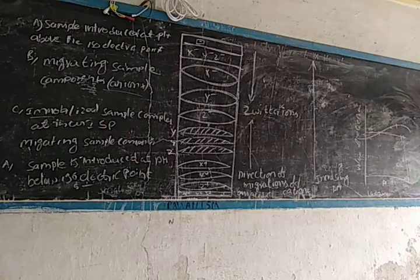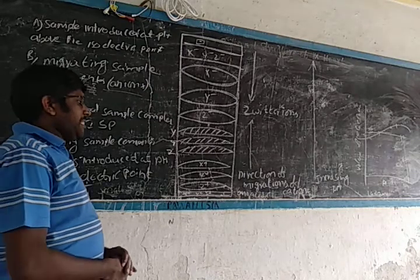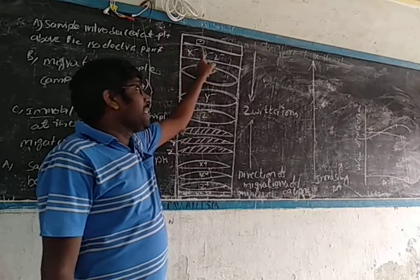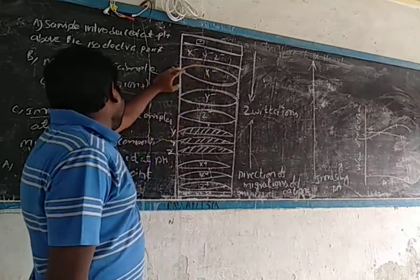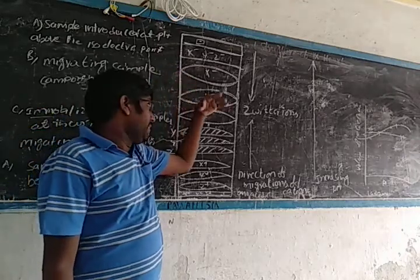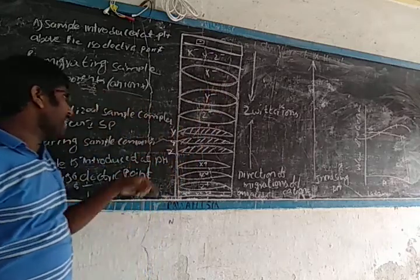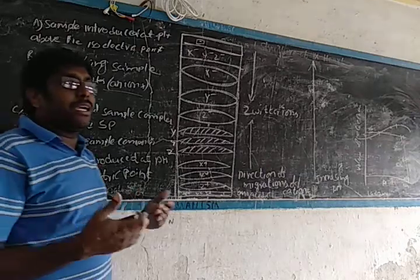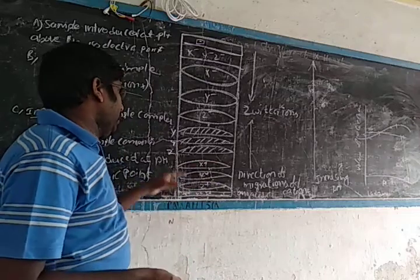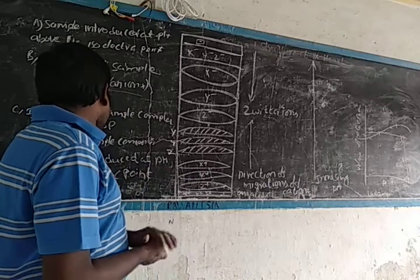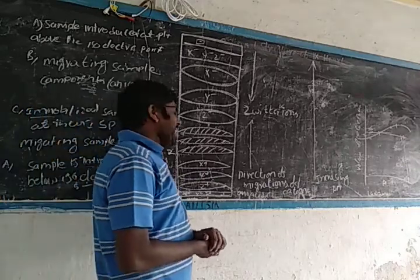We have two types of charges: positive charges and negative charges, represented by x, y, and z. The next step is migrating sample components, followed by immobilizing sample components. After the sample components reach their isoelectric pH, ions stop migrating.